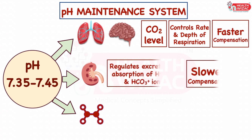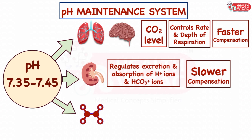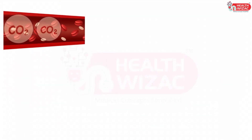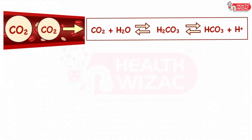Kidneys maintain the blood pH by regulating the excretion or absorption of H+ ions or bicarbonate HCO3 ions. Kidneys are usually slower and may take several hours or days for compensation. Buffers include carbonic acid and bicarbonate ions present in the blood. In a normal scenario, carbon dioxide dissolved in the bloodstream is neutralized by carbonic acid and bicarbonate buffers, forming a weak acid called carbonic acid, which dissociates into H+ and bicarbonate ions, helping to maintain normal pH.